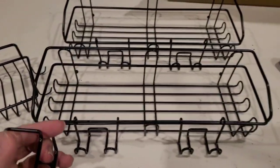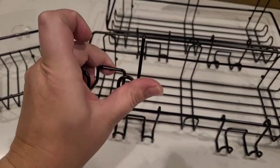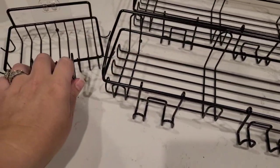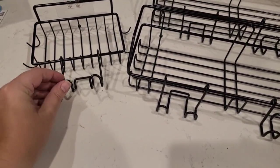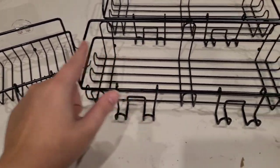It also comes with five of these additional hangers so you can put them in any type of configuration you want. They just hook, as you can see, right onto the outside of the rim all the way around.